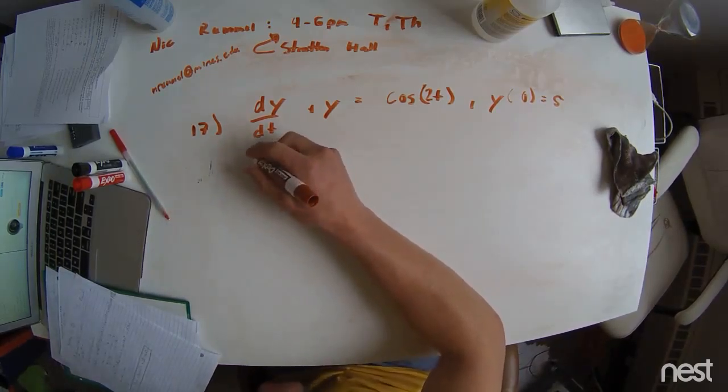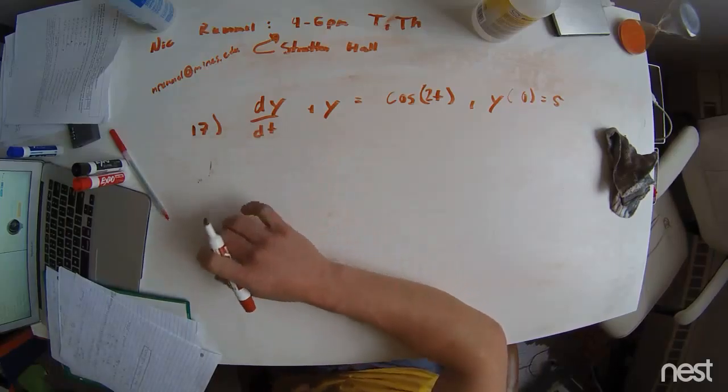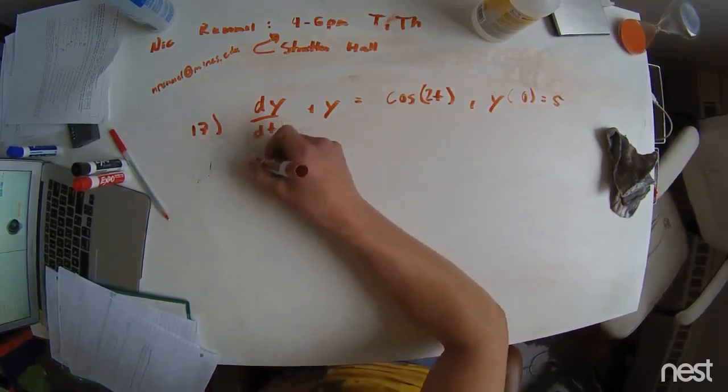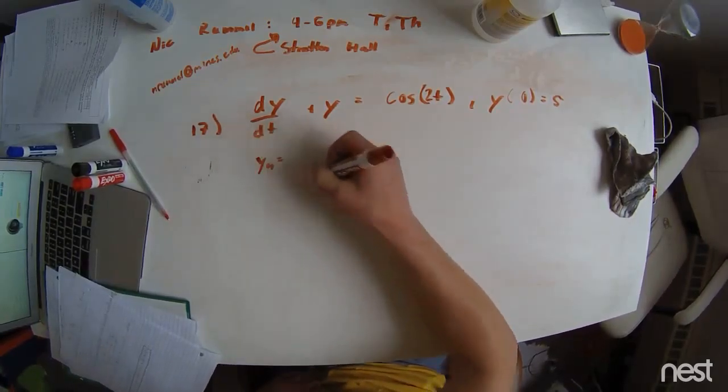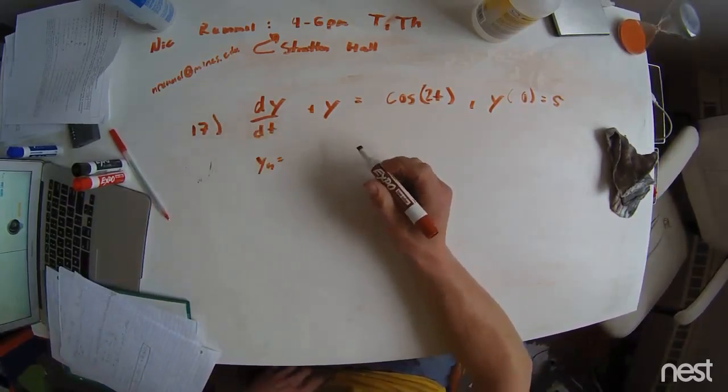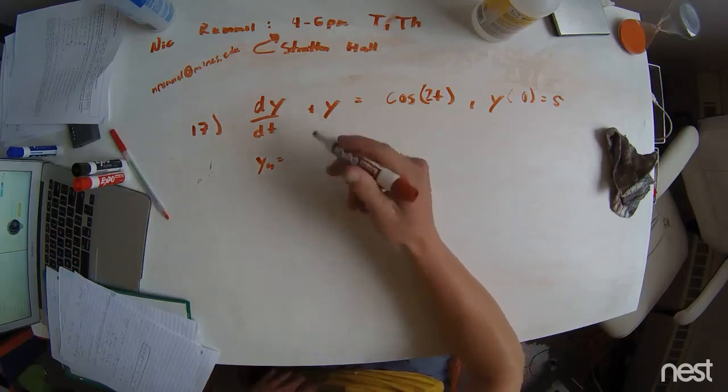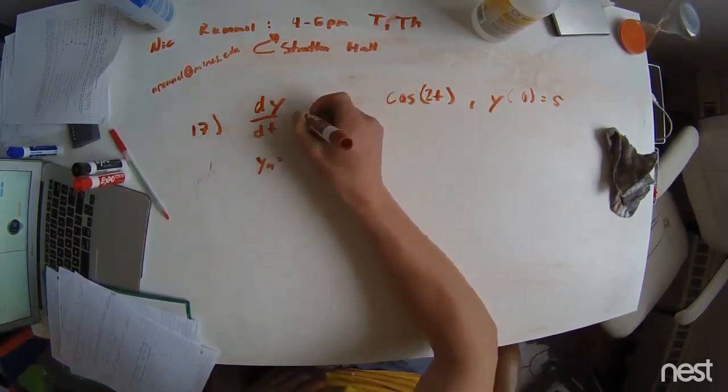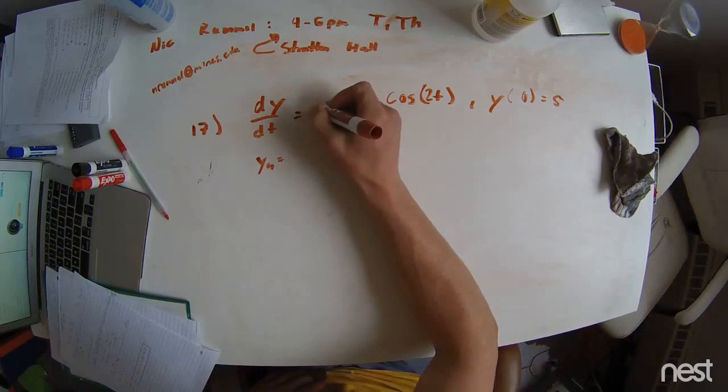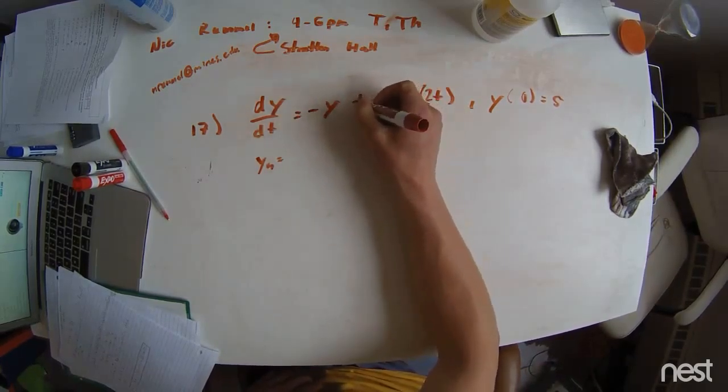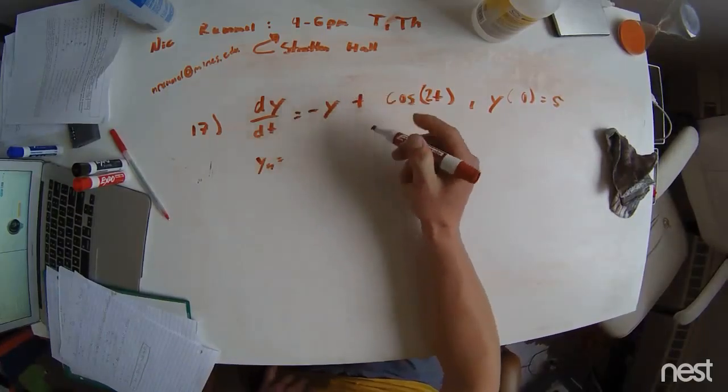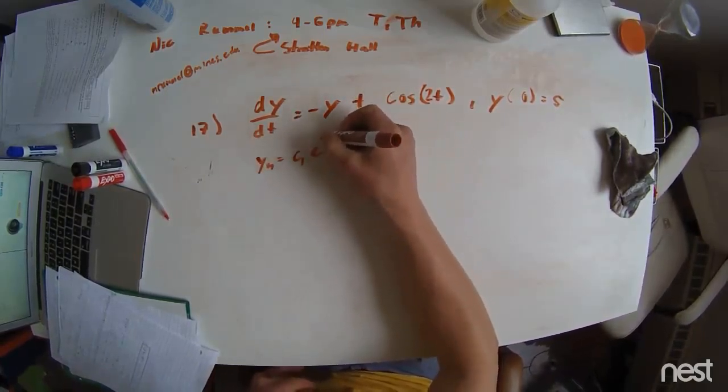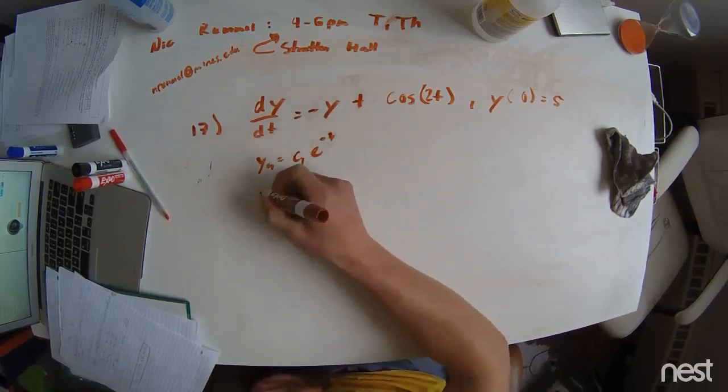We have an initial value problem with the method of undetermined coefficients right here for you. First, we're going to be looking at our y-homogeneous case. It's pretty simple this time, because we see that if we move the equal sign, this problem looks a little bit more familiar to you. We have dy/dt equals negative y, which means we have a constant times e to the negative t. That's your homogeneous case.